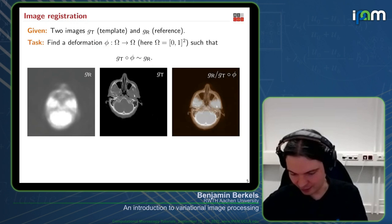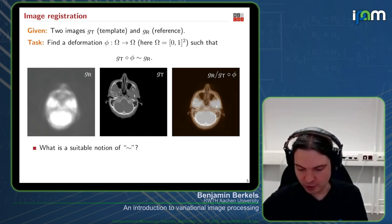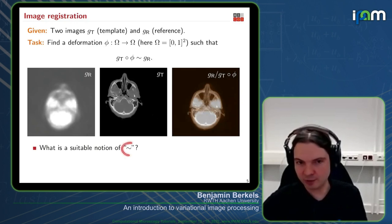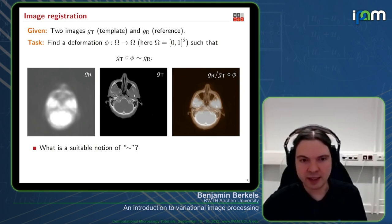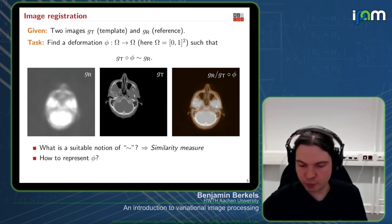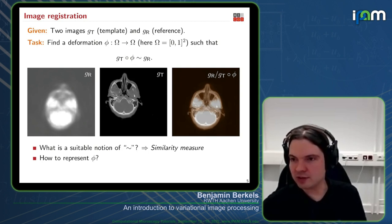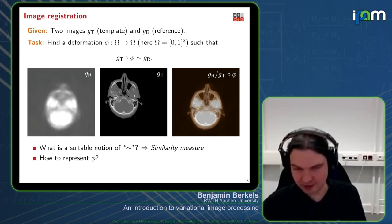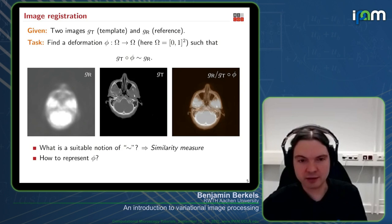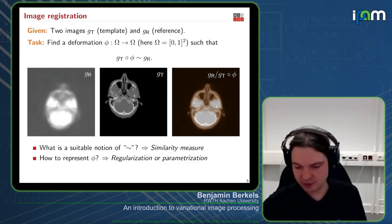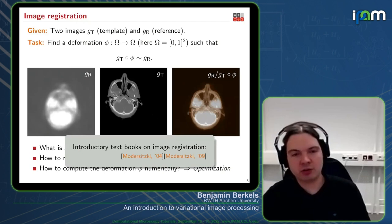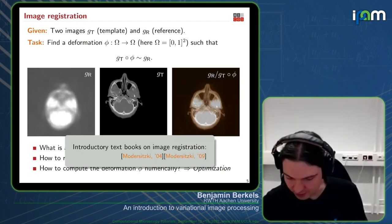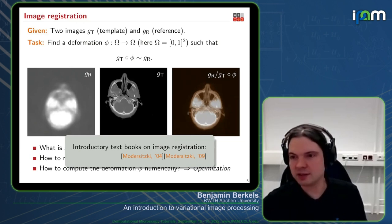There are immediately many questions: what is a suitable notion of similarity? This strongly depends on the application — here the gray values are not directly comparable. Another big question is how to represent the deformation. In this simple case one translation vector would be enough, but we will see examples requiring more complicated deformation models. How you actually compute this is the matter of optimization. There are very nice introductory books on image registration by Jan Modersitzky.